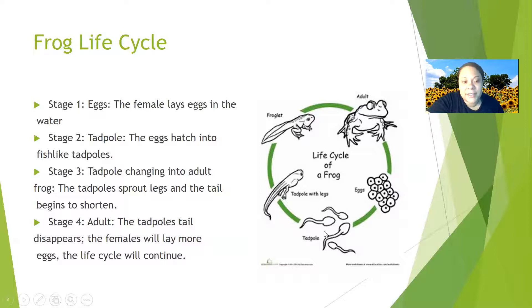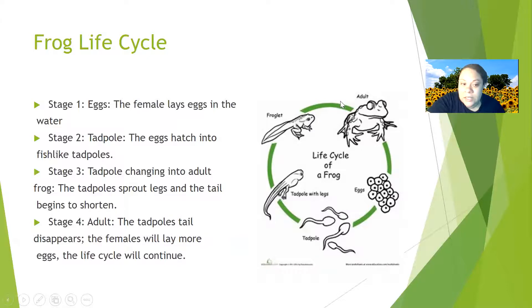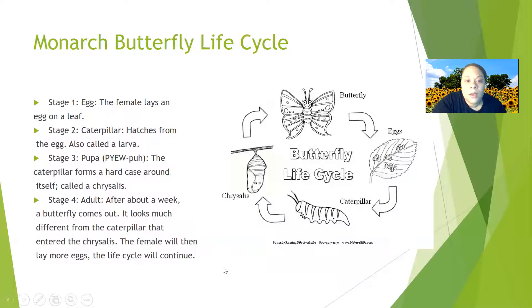For your project, I need to see something like this — a good visual. So if you do a chicken, you could draw an egg, then a chick, then an older chick, then the adult chicken. Your visual should look something like this, and your explanation when describing the life cycle should also look like this. I'd like you to write a page — not just a few words, but more complete sentences.